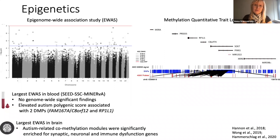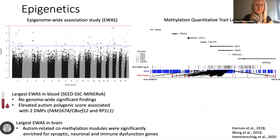The largest EWAS of autism was performed in blood in almost 3,000 individuals and did not identify any genome-wide significant differentially methylated sites. However, elevated autism PRS was associated with differentially methylated positions in the FAM167A gene and RP1L1 gene. The EWAS of autism performed in post-mortem brain tissues reported autism-related co-methylation modules to be significantly enriched in synaptic, neuronal, and immune dysfunction genes. However, these studies were commonly performed on relatively small sample sizes and further replication studies are warranted.